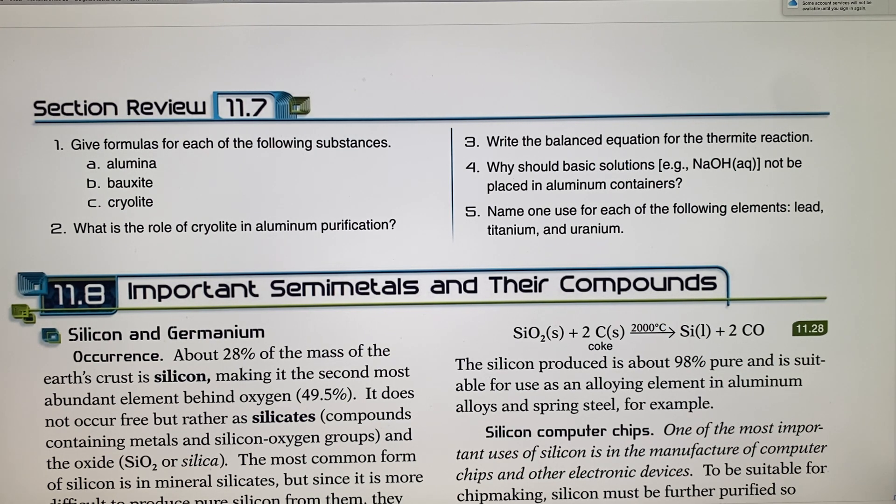Number five, name one use for each of the following elements. Lead is used what? Let's say lead is used in radiation shields. Like, well, and then you go to the dentist and have x-rays and lead weights. So titanium is used for the fastest jet. Remember, titanium is very strong. And uranium is used in nuclear power plants. So let's quit at that point. I think you got enough information. So we'll go on to section eight in just a little bit.